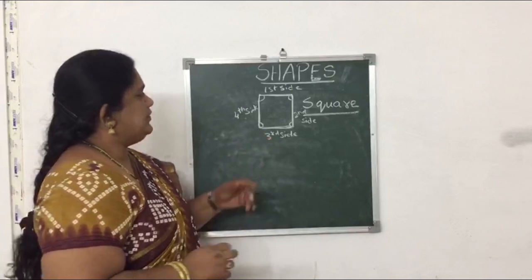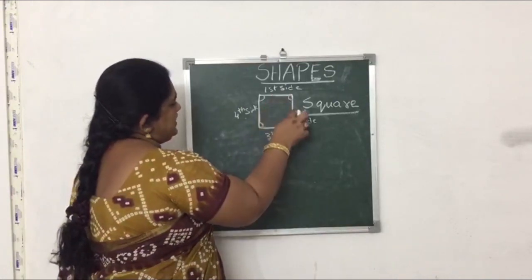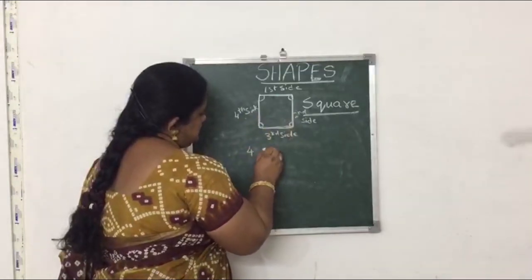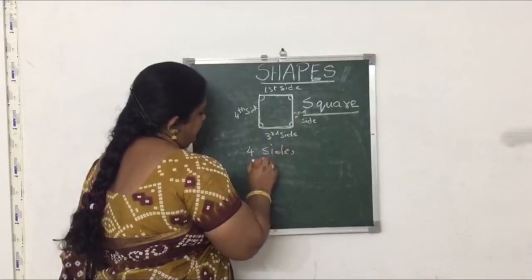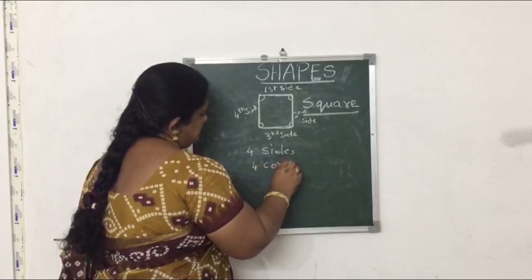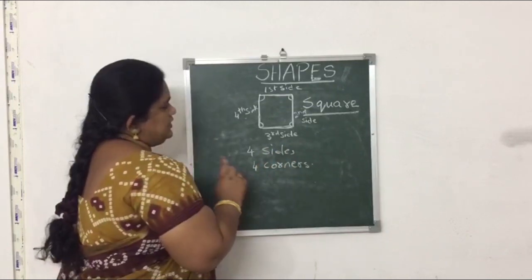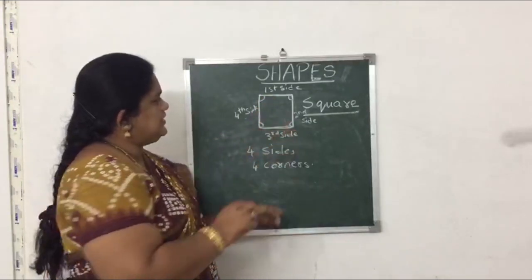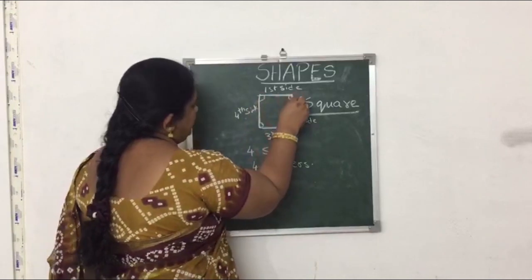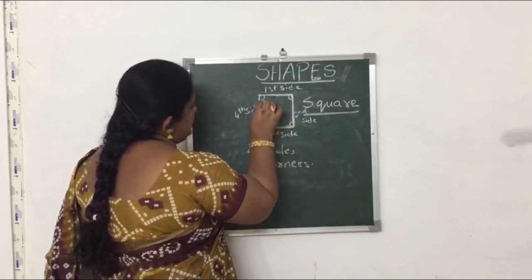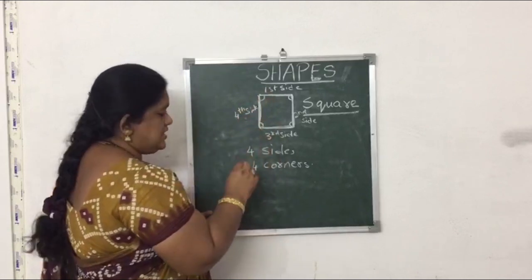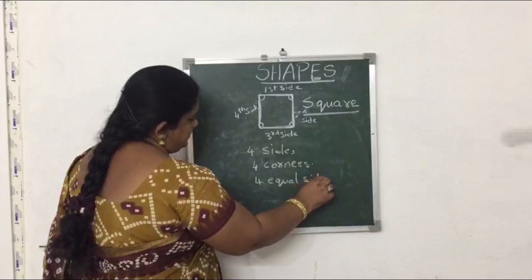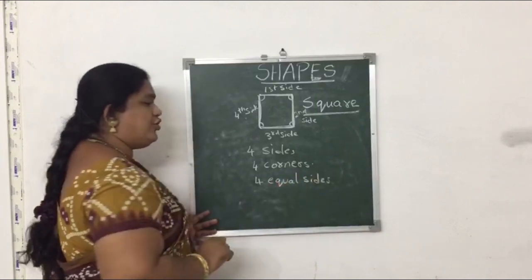Let's get into the topic. First side, second side, third side and fourth side — so it has 4 sides and 4 corners. This side is equal to this side, and this side is equal to this side, and this side is also equal to this side. So it has 4 equal sides.